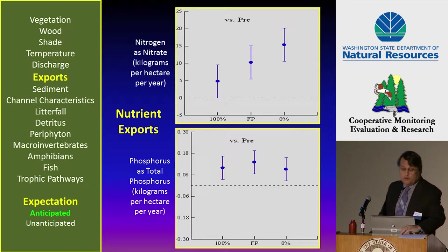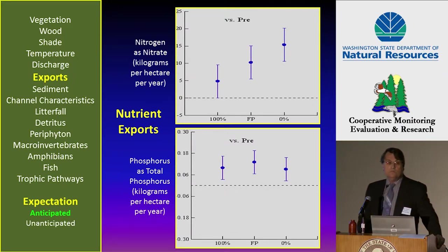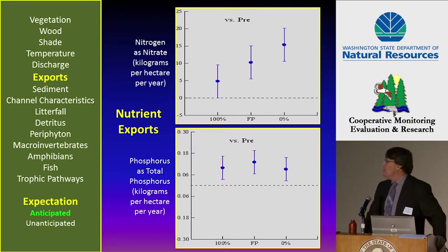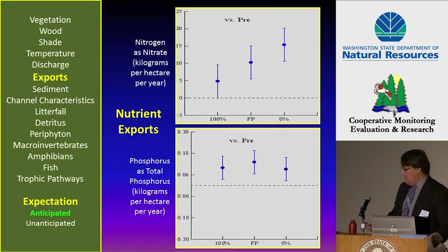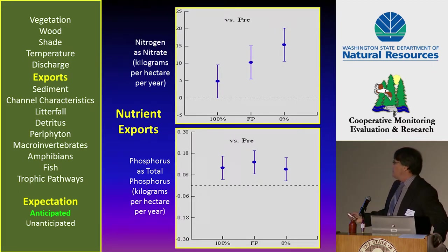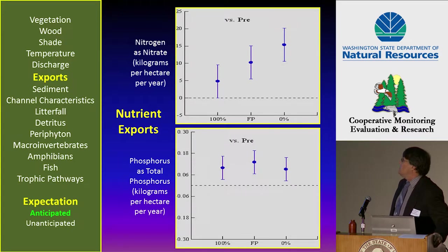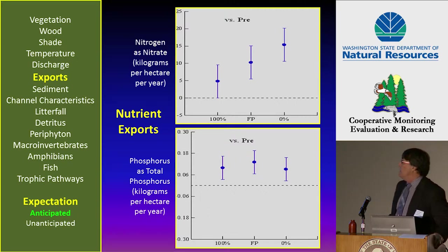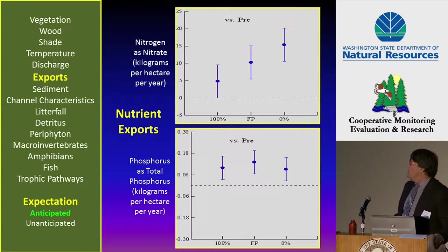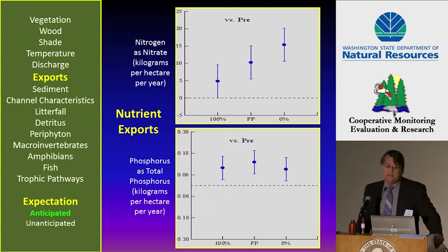The next aspect of exports is nutrients. Nutrients were measured in one of two ways: nitrogen was examined as nitrate, and phosphorus was examined as total phosphorus. Nitrogen is on top here, and nitrogen increased basically with treatment intensity relative to the references. Whereas phosphorus increased across all treatments, but it was not significantly different across those treatments.